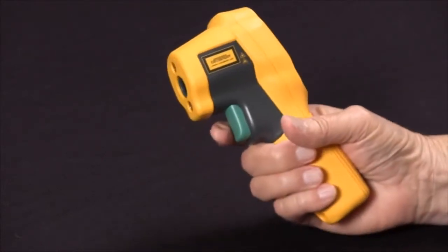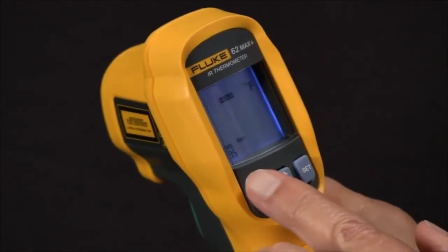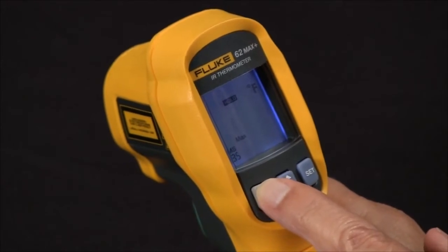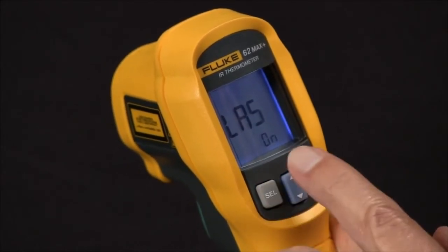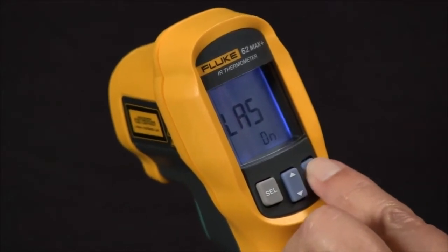First, press and release the green trigger. Then take the select button and press it multiple times until you see LAS on. At this point, you use the set button to turn it off or on.